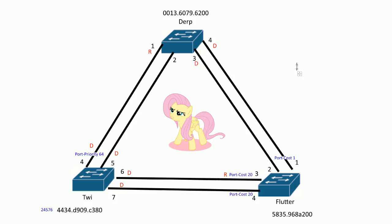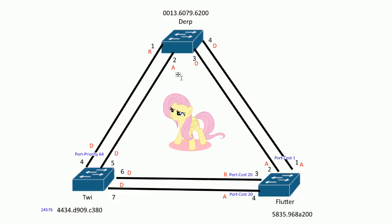Once you find the root ports and designated ports for each link, all others become alternate block state. These ports are alternate block, port two and port four in Flutter are alternate block, and port two on Derp is also in an alternate block state.